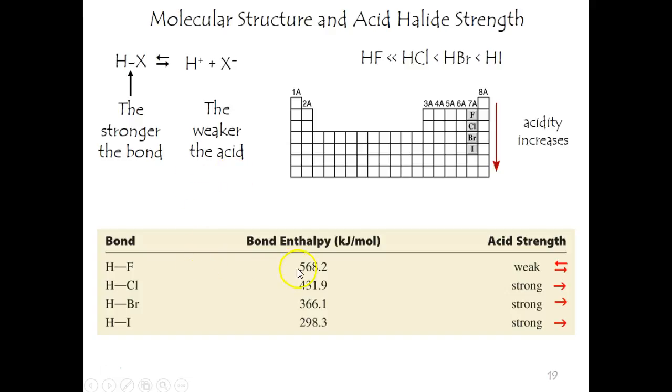And then it's also reflected in the bond strength. HF has the strongest bond. HI has the weakest bond.